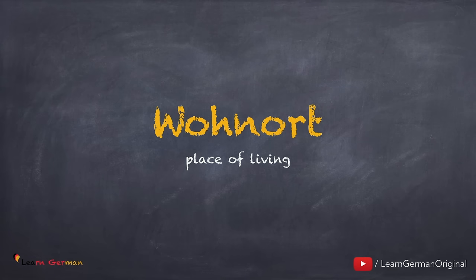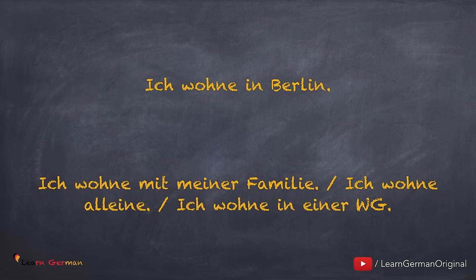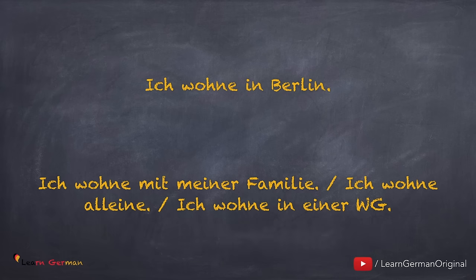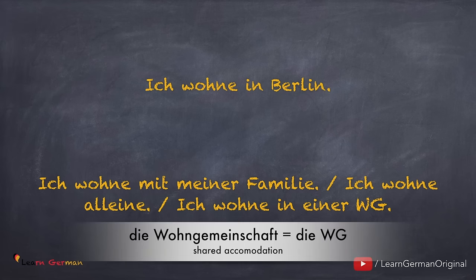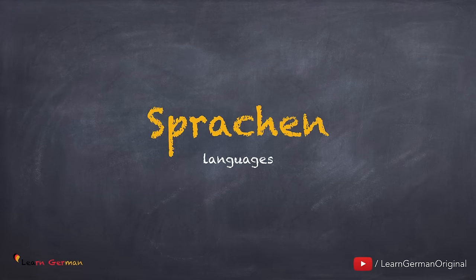Wohnort. Wo wohnst du? Ich wohne in Berlin. Ich wohne mit meiner Familie, oder ich wohne alleine. Du kannst auch sagen: ich wohne in einer WG. Eine WG ist wenn zwei, drei oder mehr Leute eine Wohnung mieten oder teilen.